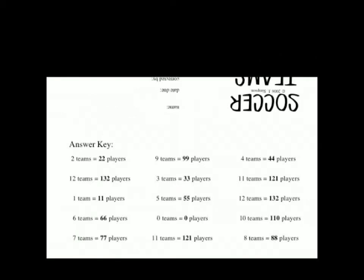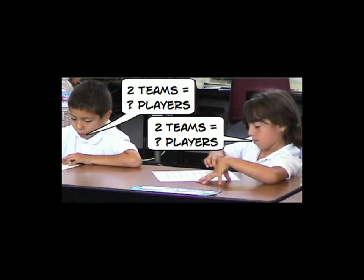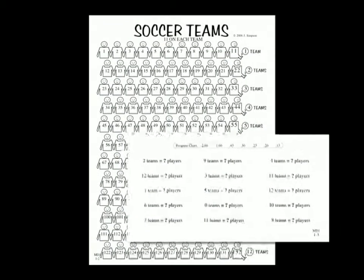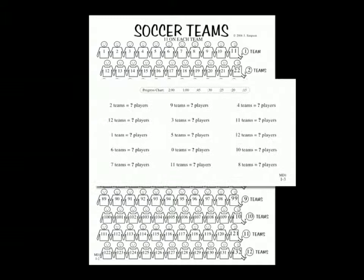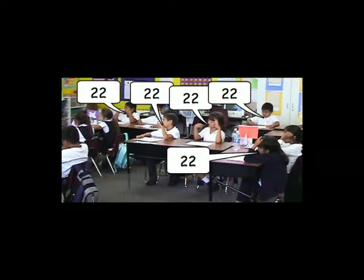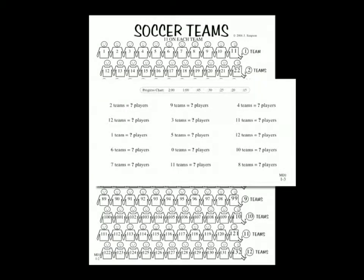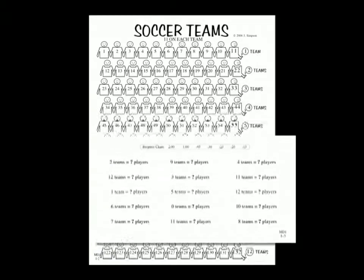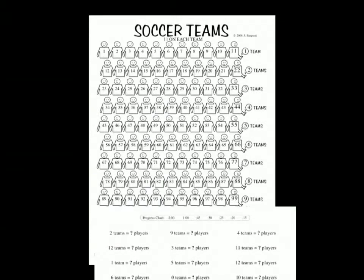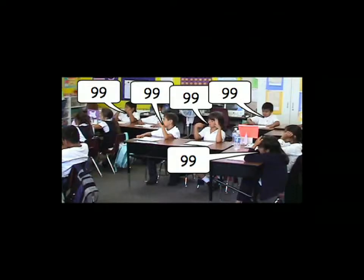Ask the students to read the first problem. Now move your folded page to show that. Since assessment is important, make sure that everyone is doing it correctly. How many players do you see? That's correct. Let's do the next problem across. How many teams do we have to show? And how many players is that altogether?